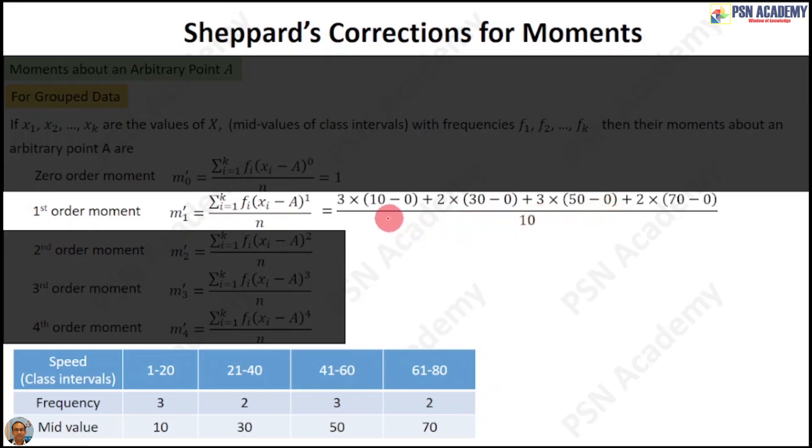Now, the question is, why are we multiplying this frequency 3 with 10, the mid-value of the class interval? Because the actual data of the observations is not available to us. We know the speed of the car was between 1 kmph and 20 kmph for 3 times, but we do not know the actual speeds. There are several possibilities - it may be 3 kmph, 11 kmph, and 18 kmph, or 6 kmph, 17 kmph, and 1 kmph.